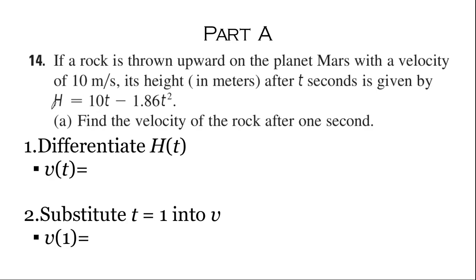Let's look at the first part. In order to find the velocity, we need to differentiate this function here. The derivative of 10t is just 10, and the derivative of negative 1.86t squared is negative 3.72t, because the 2 multiplied by the 1.86 gives 3.72.